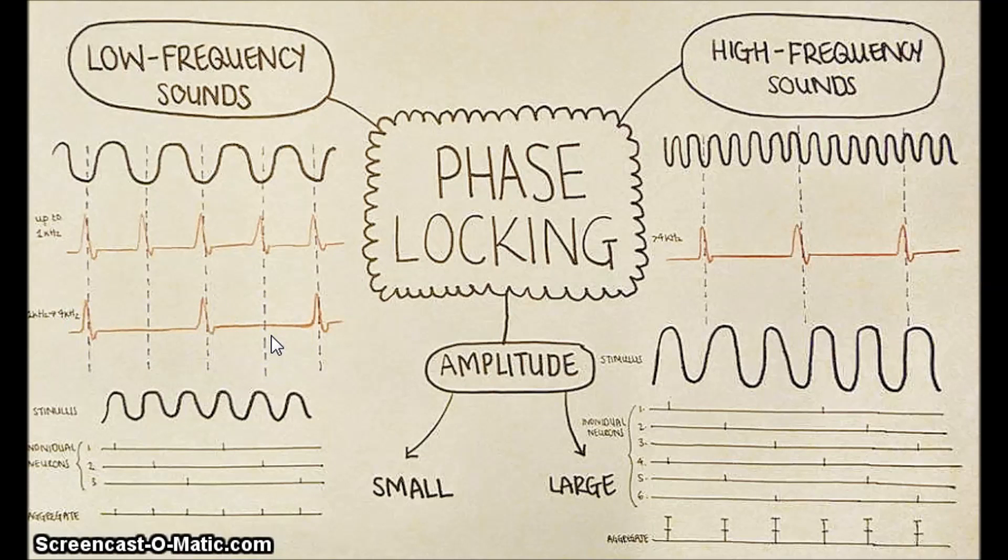The action potentials will still only occur at the same phase of the sound though, which means that phase locking is still in action. If you have a group of neurons, each responding to different phases of the input signal, it's possible to have a response to every cycle overall. Therefore, you'll have a measure of the frequency. This is called the volley principle.